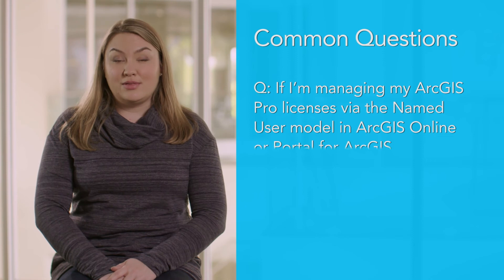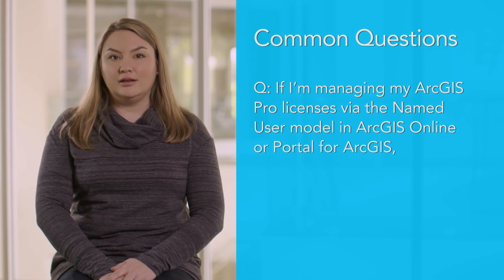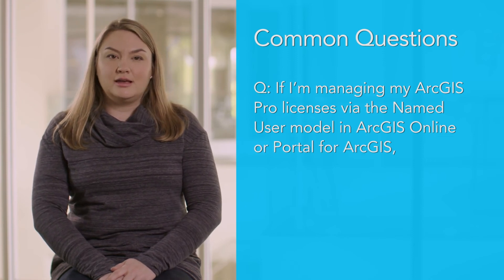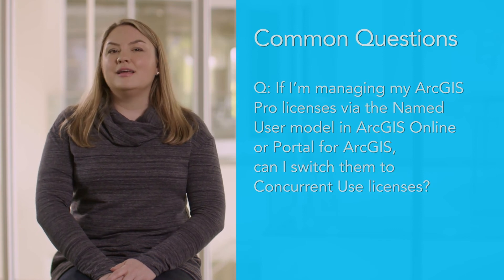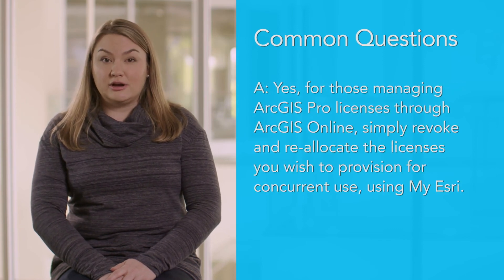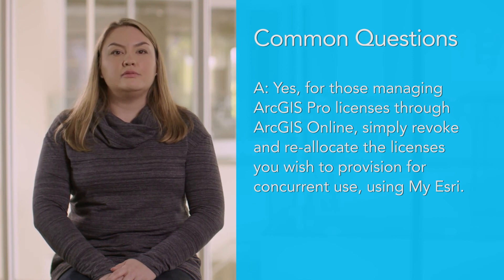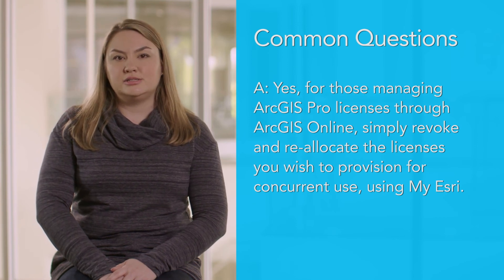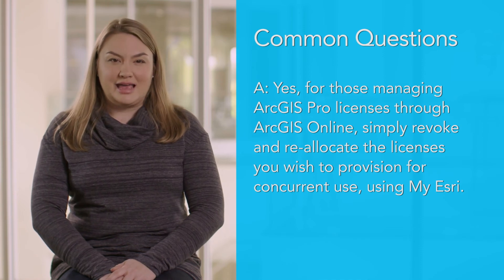Activating ArcGIS Pro may be new to you, so here are some answers to common questions about how to authorize and use ArcGIS Pro. Question: I'm managing my ArcGIS Pro licenses via the named user model in ArcGIS Online or Portal for ArcGIS — can I switch to concurrent use licenses? Yes. For those managing ArcGIS Pro licenses through ArcGIS Online, simply revoke and reallocate the licenses you wish to provision for concurrent use using My Esri. For those managing through Portal for ArcGIS, please contact your customer service representative for further assistance as additional steps are needed.